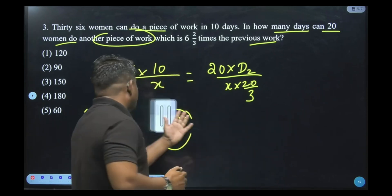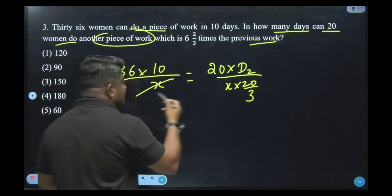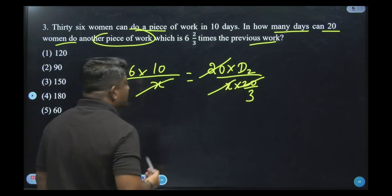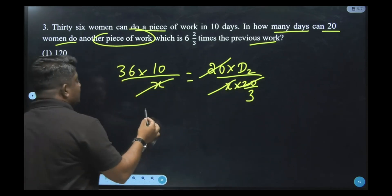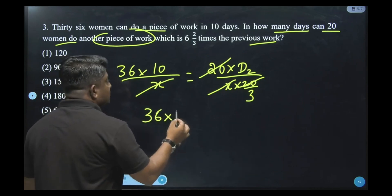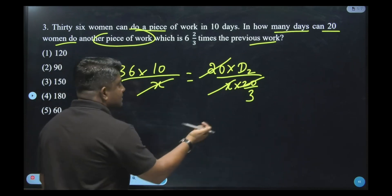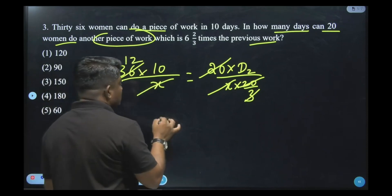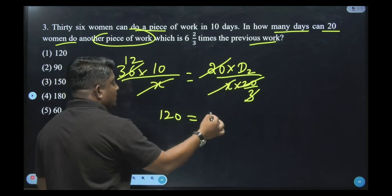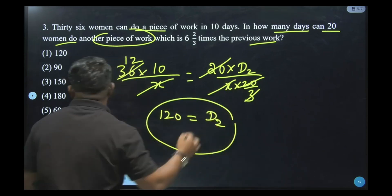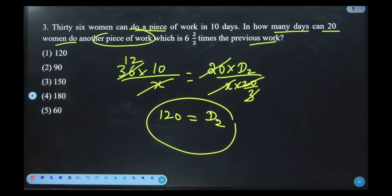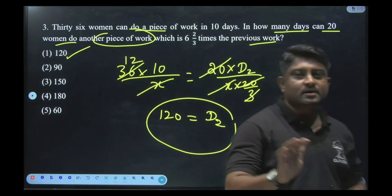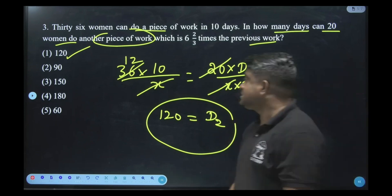After cancelling x on both sides and cancelling 20 with 20, the 3 moves to the numerator on the left-hand side: 36 × 10 × 3 = D₂ × 20... simplifying, 3 and the numerator give 36 × 10 = 120, so D₂ = 120 days. The 20 women need 120 days to complete the piece of work. These three questions were all based on the MDH/W formula.